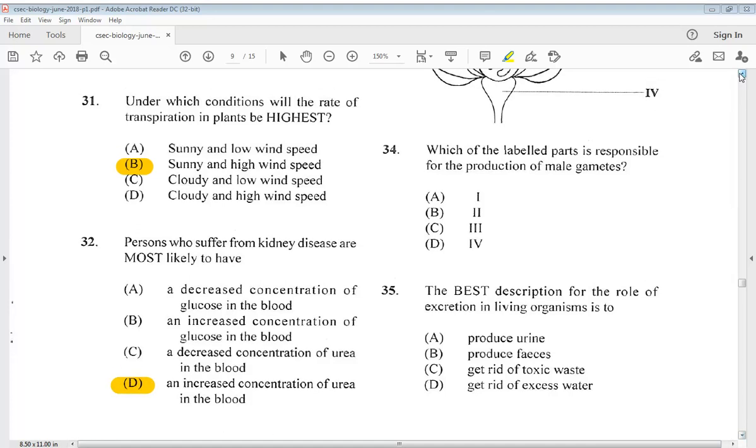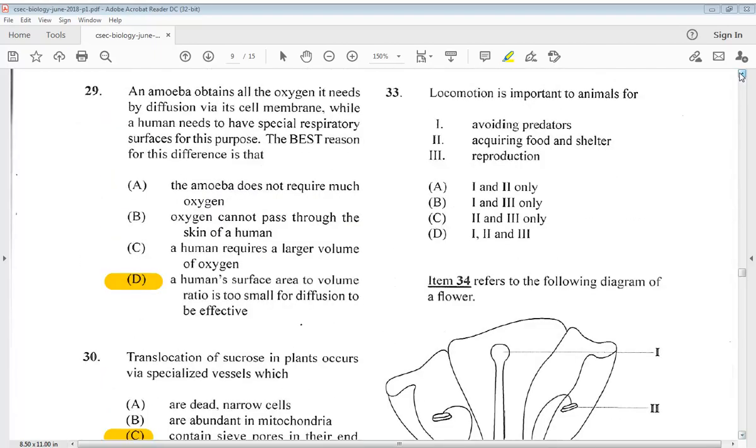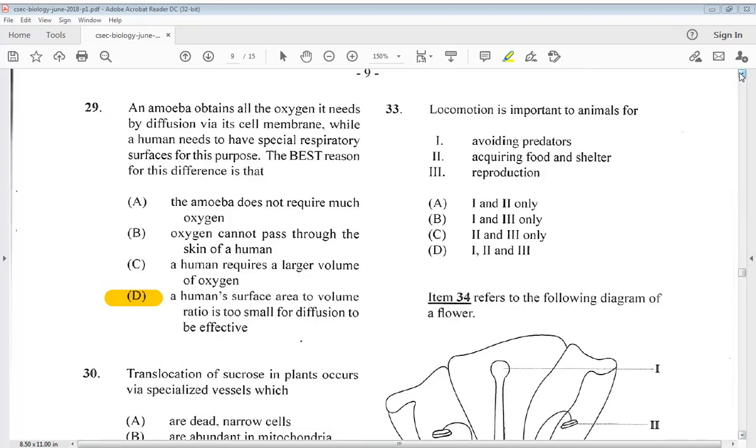Let's go to number 33 now. Locomotion is important to animals for 1. Avoiding predators. 2. Acquiring food and shelter. 3. Reproduction. So the answer for 33 would be D, all of them.